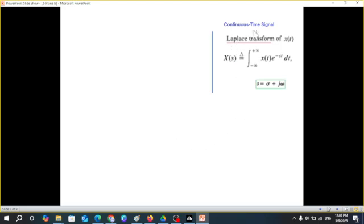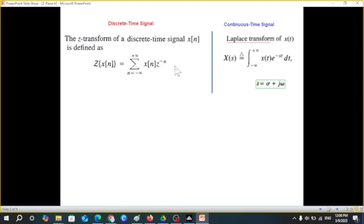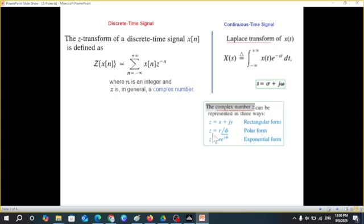If you recall in the continuous time signal we used this formula to define the Laplace transform. Similarly in discrete time we'll be defining Z-transform almost similar except for the integration we will be using summation sign. So that Z-transform of X[n] would be written sum minus infinity to plus infinity X[n] and with that we multiply Z^(-n). Like here S was the complex quantity, similarly n is an integer and Z is in general a complex number. Now there are several forms of complex numbers that are used and all are applicable here but we will preferably use the exponential form.